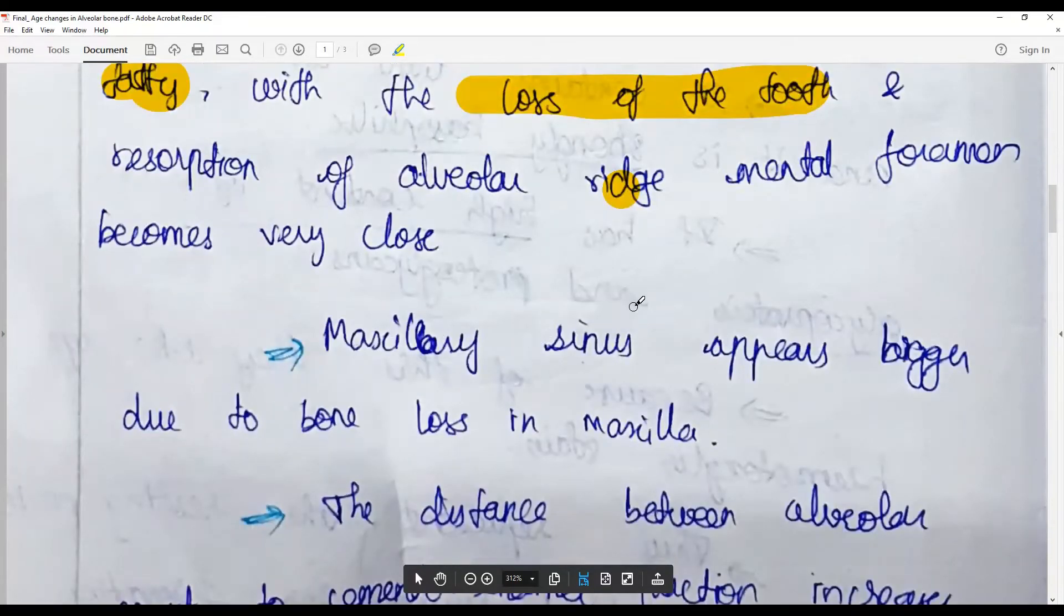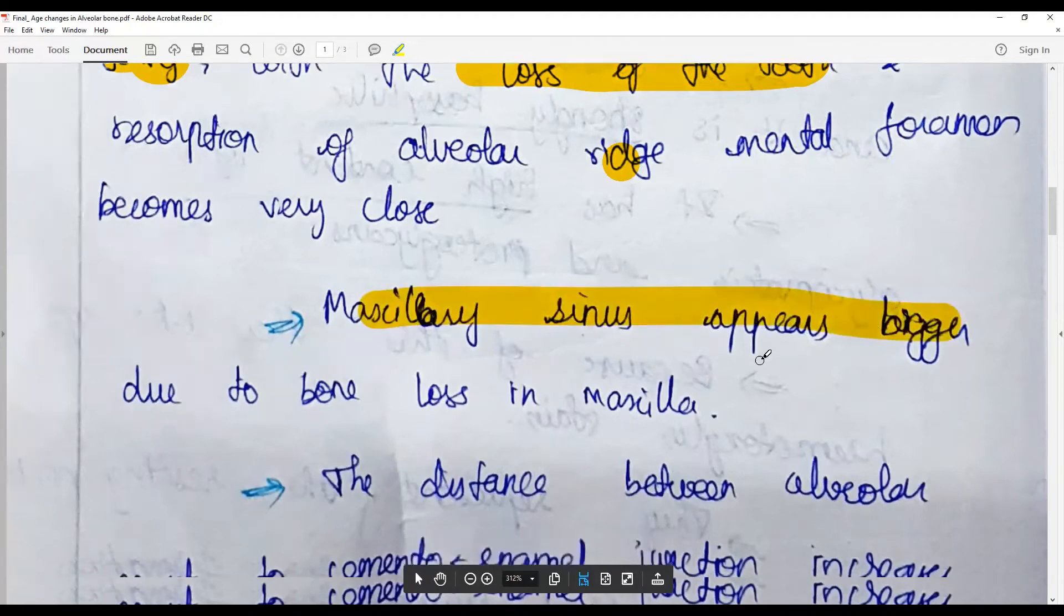Because of bone resorption failure, or rather the rate becomes in favor of resorption, the maxillary sinus may appear to be bigger.